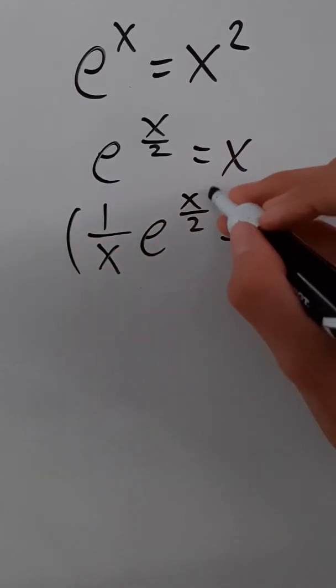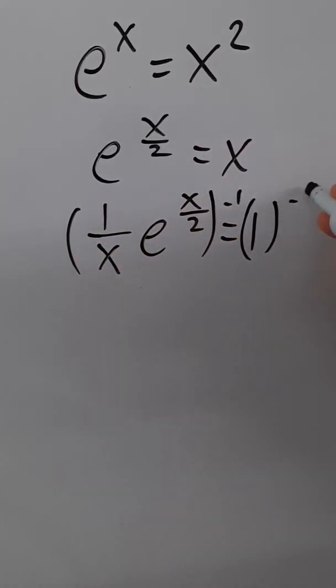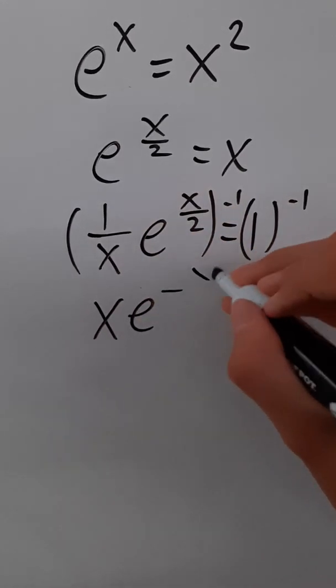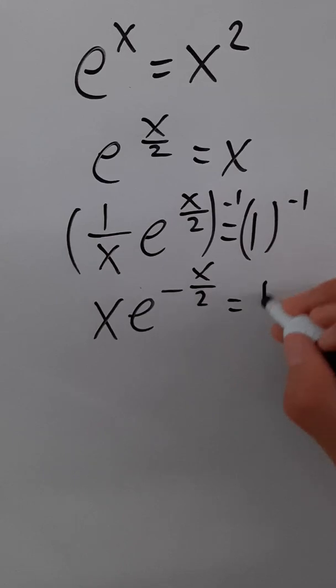So now let's raise both sides to the negative one power and you'll see why. So we get one over x to the negative one power is x and then e to the negative x over two is still equal to one.